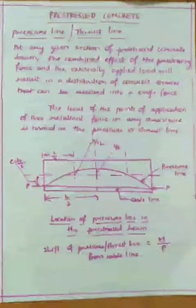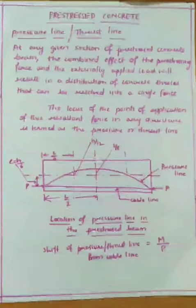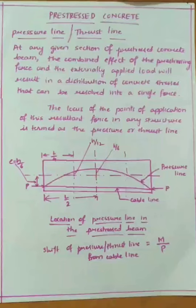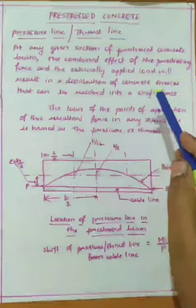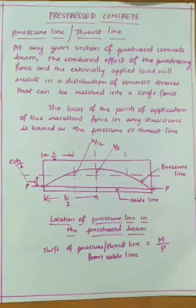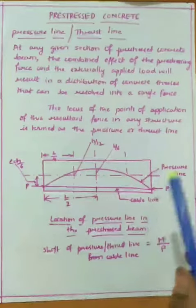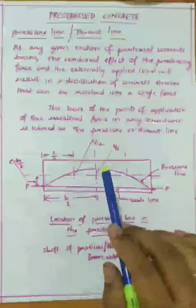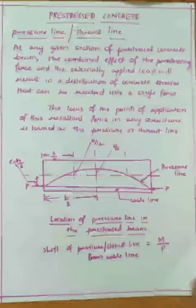Today let us discuss what is pressure line or thrust line in prestressed concrete. At any given section of a prestressed concrete beam, the combined effect of the prestressing force P and the externally applied load will result in a distribution of concrete stresses that can be resolved into a single force. The locus of the points of application of this resultant force in any structure is termed as the pressure line or the thrust line.